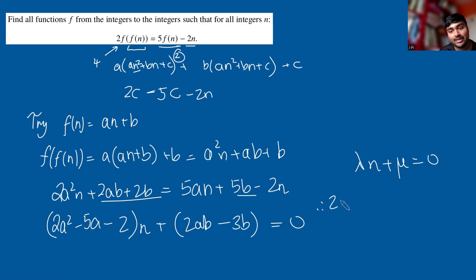From this, we can deduce that 2a² - 5a - 2 = 0. Now if we solve this quadratic, you get a is 2 or a is 1/2.